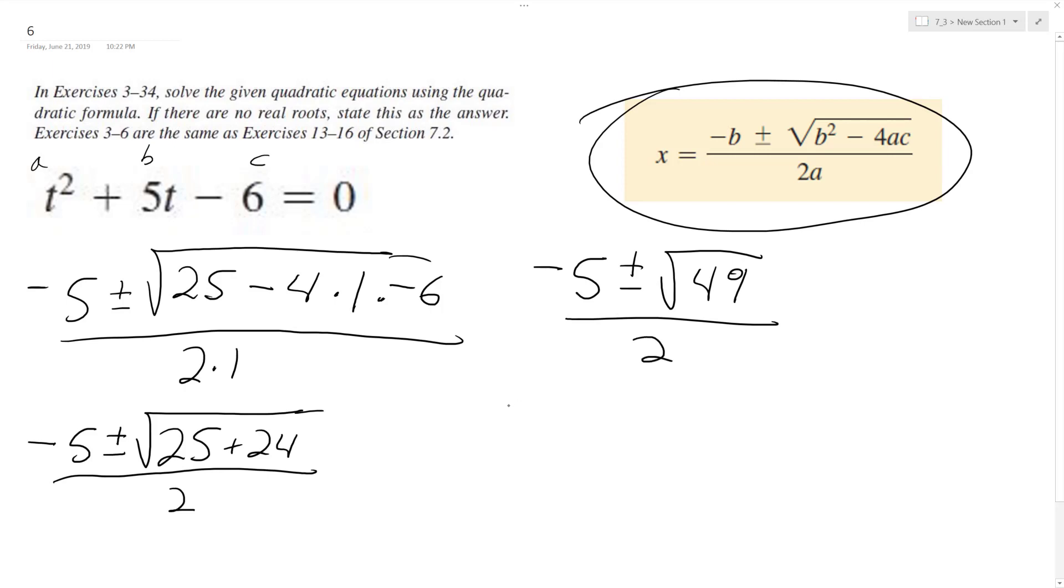So we get, all right, so then what we do here is we have negative 5 plus or minus 7 all over 2. Which yields negative 12 over 2 and negative 5 plus 7 is going to be negative 2 all over 2. So we have negative 6 and negative 1.